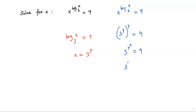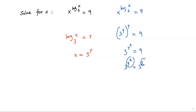So 3 to the power y squared is equal to 9. This 9 can be written as 3 squared, because 9 is a power of 3. Here the two terms are equal with the same base. Whenever two terms are equal with the same base, we can equate the exponents. That is, y squared is equal to 2.